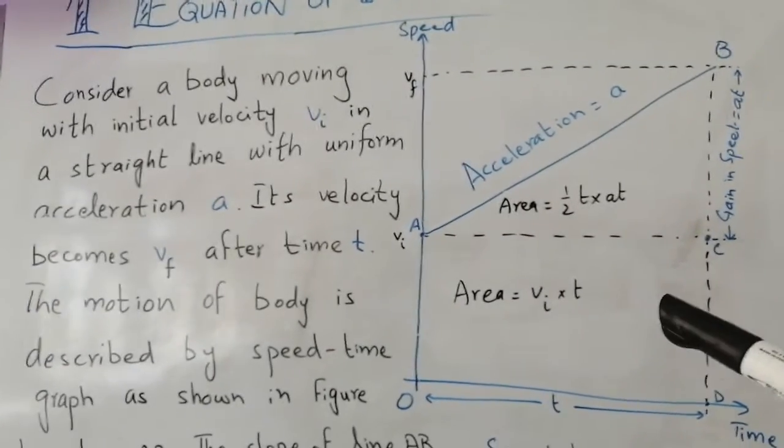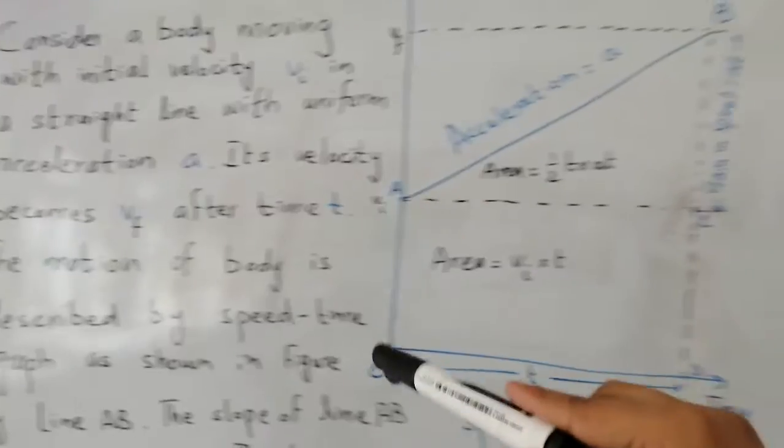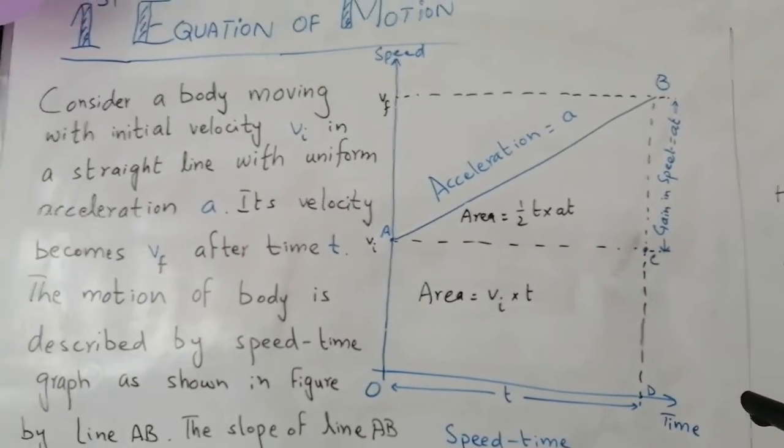That motion is described by a speed-time graph. The speed is on the y-axis and the time is on the x-axis.